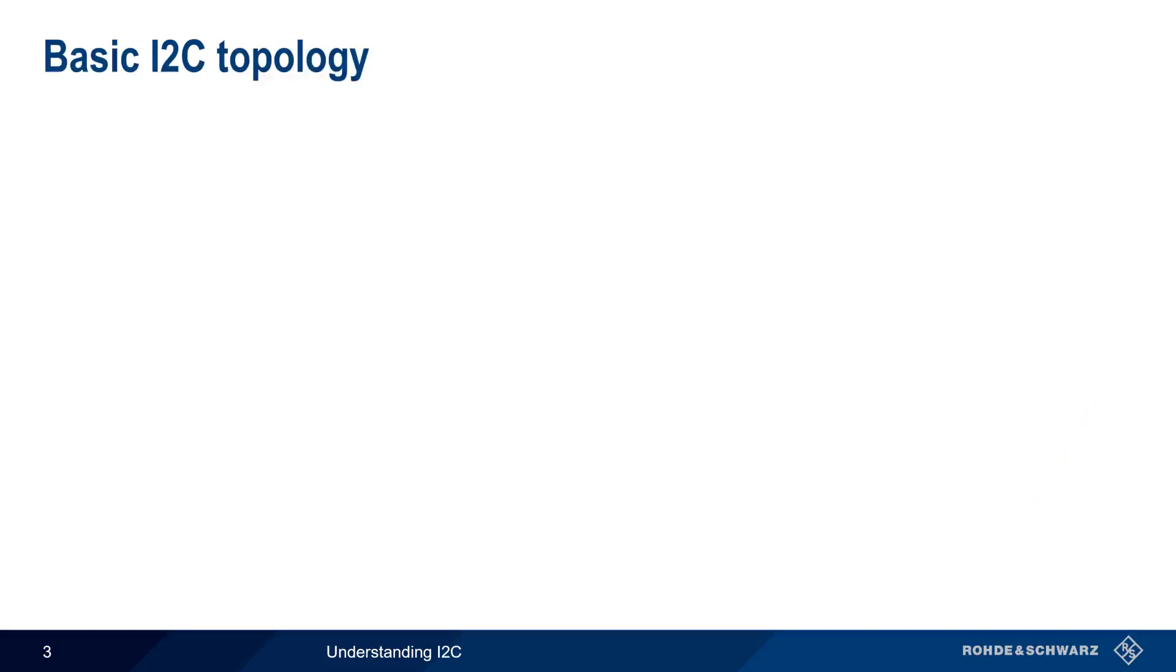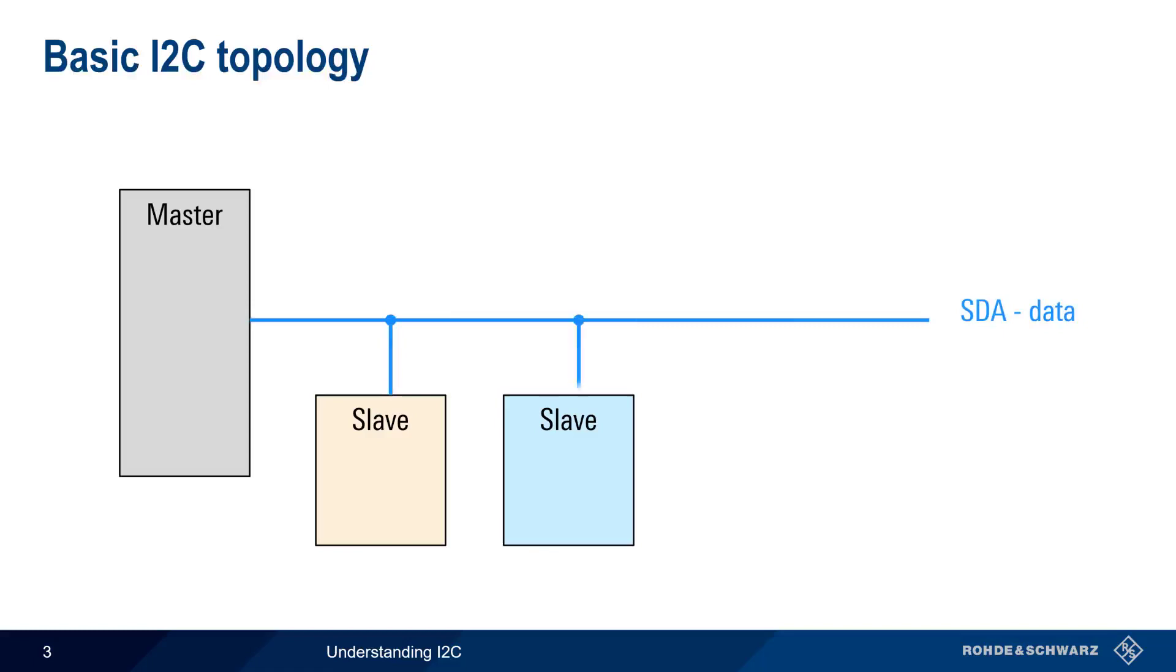We'll begin with a basic I2C topology. A master is connected to one or more slave nodes via two shared lines, SDA or Serial Data, and SCL or Serial Clock. These two lines are each connected to a voltage, VCC or VDD, by a single pull-up resistor. We'll explain the role of these resistors later in this presentation. Note that devices can be added to or removed from the bus at any location and at any time.